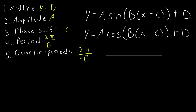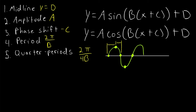The importance of the quarter periods is that the key points of a period of a sine and cosine function — the point where it starts at the midline, then goes up to its peak, comes back to the midline, goes down to its lowest point, and then comes back to the midline completing the period — these key points are a quarter period apart. So the distance from one key point to the next on the x-axis is one quarter period.